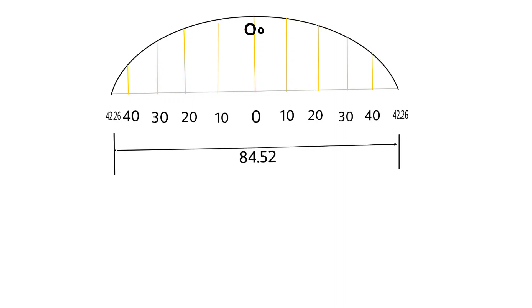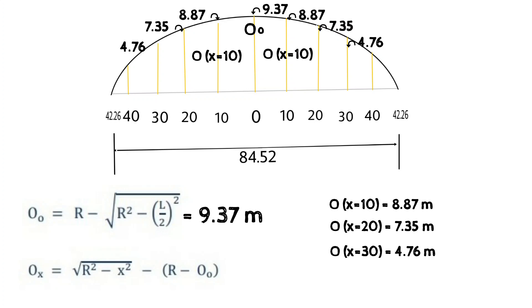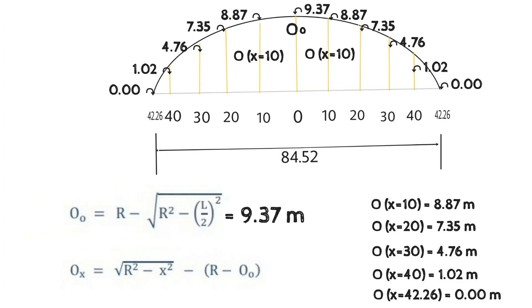With center of long chord as a reference and 10 meter interval, we will calculate the ordinates. So O0 can be calculated with formula and it will be 9.37 meter. For x = 10 meter, it is 8.87 meter. For x = 20 meter, the ordinate would be 7.35 meter. For x = 30 meter, it would be 4.76 meter. For x = 40 meter, O is 1.02 meter. And last one is for x = 42.26 meter, the ordinate would be 0 by using the formula of Ox.